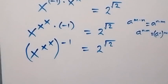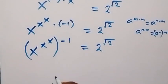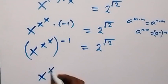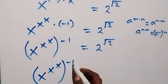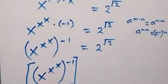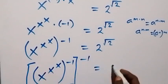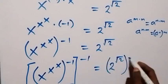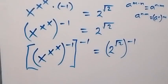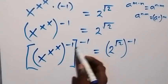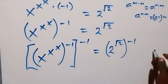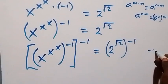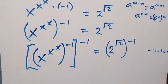Then let's multiply both sides with power minus 1. That is, we have x raised to power x, raised to power x, raised to power x, raised to power minus 1, then multiply by power minus 1 again. On the right side we have 2 raised to power root 2, then raised to power minus 1.